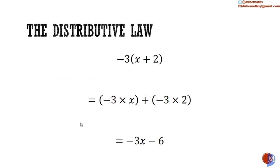We learned before that multiplication is distributive over addition. Thus, negative 3 multiplied by x plus 2 is equal to negative 3 multiplied by x, added to negative 3 multiplied by positive 2, which is equal to negative 3x minus 6. I have already gone through numerous examples of these in previous videos. Starting with an expression in the form negative 3x minus 6 and getting to the factors negative 3 and x plus 2 is the first form of factorization we'll do.